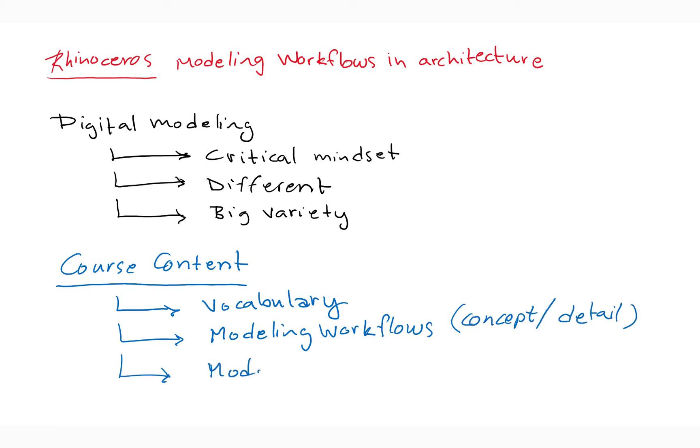The third part involves a brief discussion of digital modeling methods in architecture and how Rhino and Grasshopper and other plugins fit within these methods.